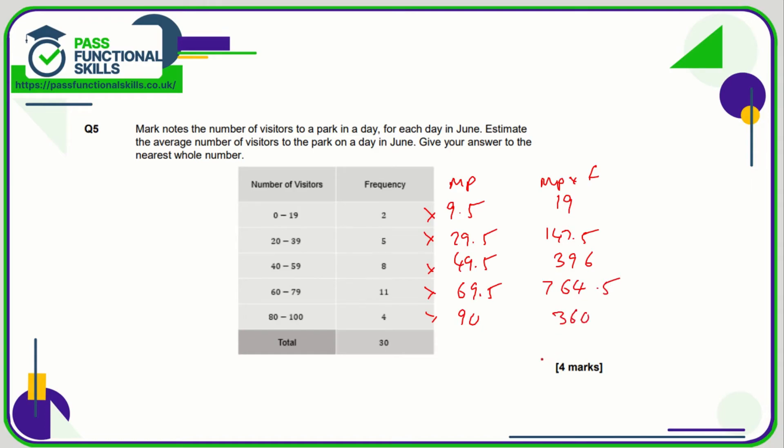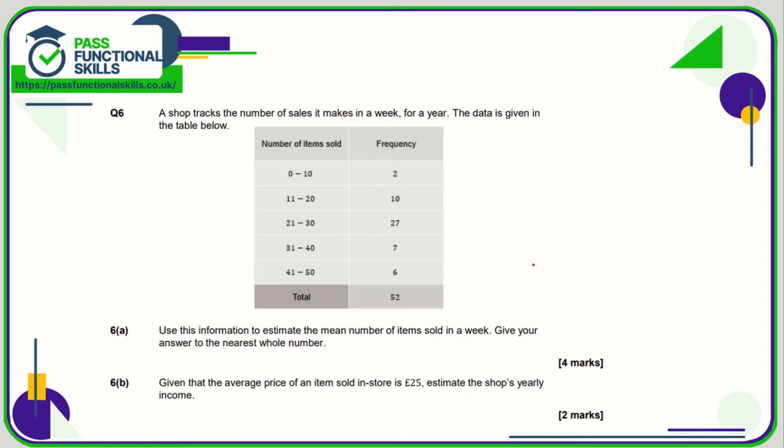Add this column together, we will get 1687, and this is the number which we are dividing by the frequency total, which is 30. And 1687 divided by 30 comes to 56.23, which to the nearest whole number is 56.